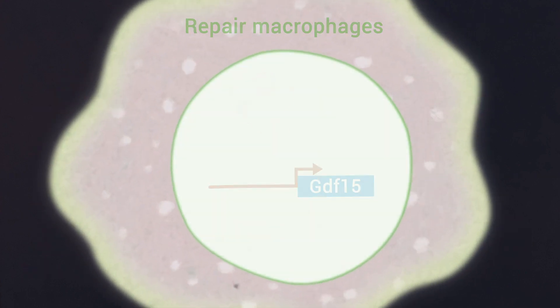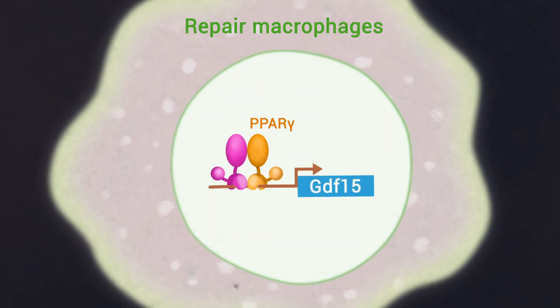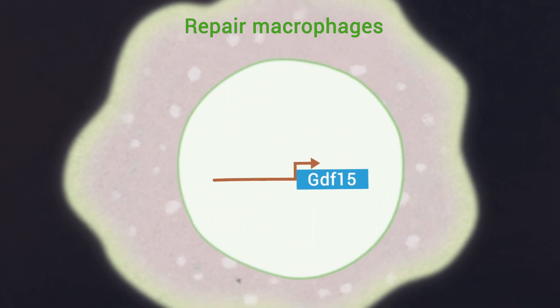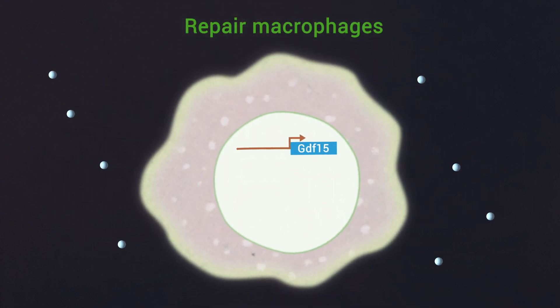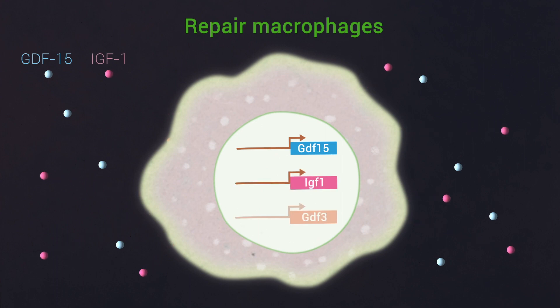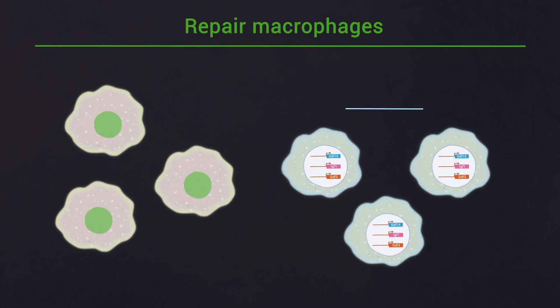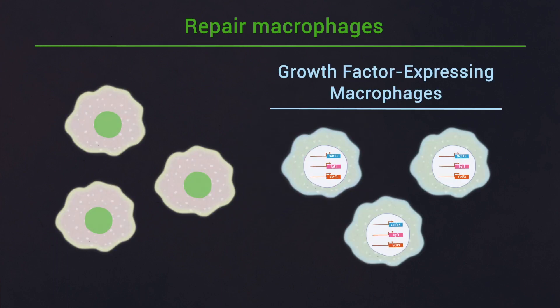Furthermore, we found that the nuclear receptors PPAR-gamma and RXR-alpha regulate the expression of GDF-15 at the transcriptional level in repair macrophages. Finally, we revealed that GDF-15 is co-expressed with other known muscle regeneration-associated growth factors, and their expression is limited to a unique subpopulation of repair type macrophages we named growth factor expressing macrophages.